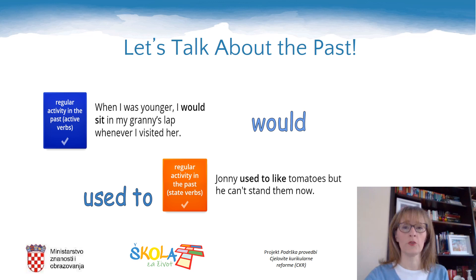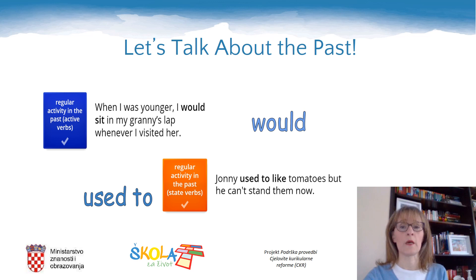We are left with the use of would and used to. Both of these expressions are used to talk about past habits. While used to can be used with both state and active verbs, would can only be used with active verbs. So, instead of 'I would sit in my granny's lap', you can say 'I used to sit in my granny's lap'. But you can't say 'Johnny would like tomatoes' — instead, 'Johnny used to like tomatoes', because the meaning changes.